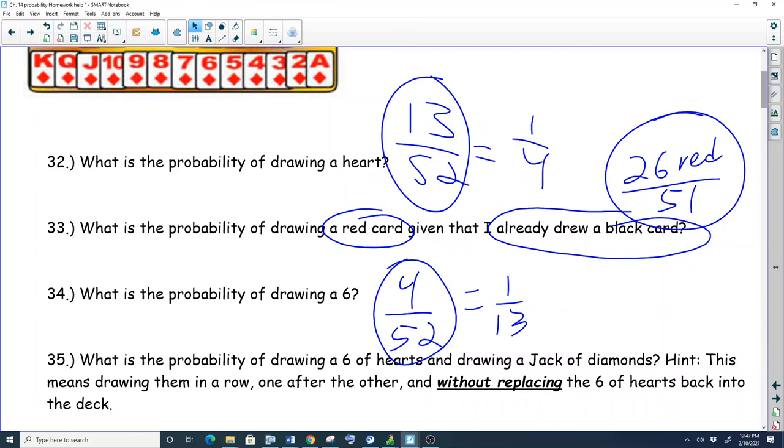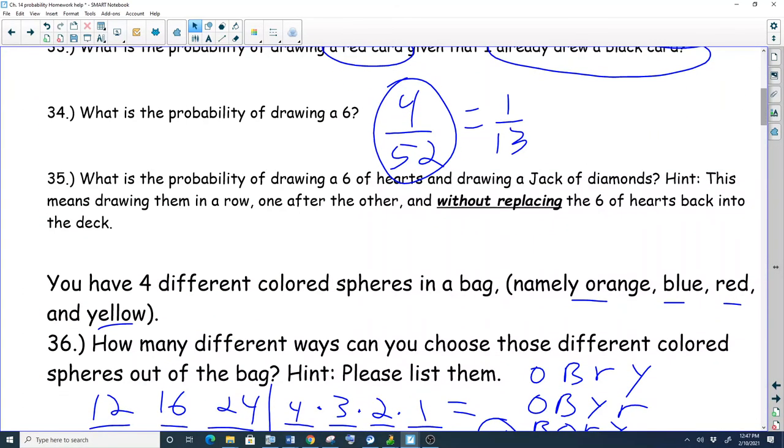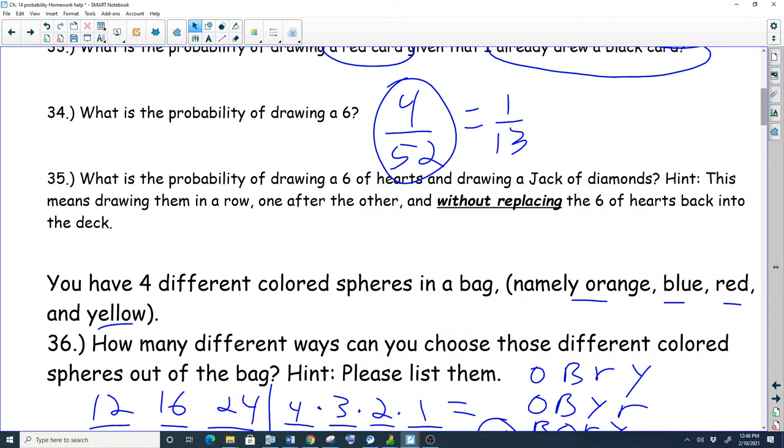Does it make sense? Kind of? No? I'll have to do a magic trick soon, because you guys are looking tired already. Okay, so here we go. Beautiful. Okay, so what about the probability of drawing a six of hearts, and drawing a jack of diamonds? This is drawing them in a row, one after the other, without replacing that six of hearts. Do you have a guess? Kenzie, or Annabelle, or Taytan? We'll have Parker as your backup, in case either of you guys don't know how to do that one, or what the answer is.